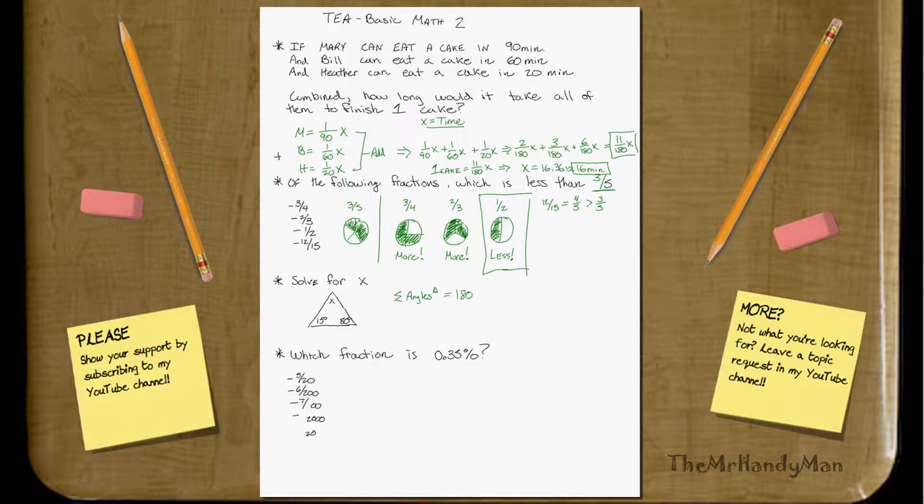So what we do is we just add up all the other ones, 15 degrees, plus 80 degrees, plus x degrees. Well, subtract the 15 and the 80 over, minus 15, minus 80, and you're going to get x is equal to 85 degrees. Pretty simple. It's all about knowing the rules.